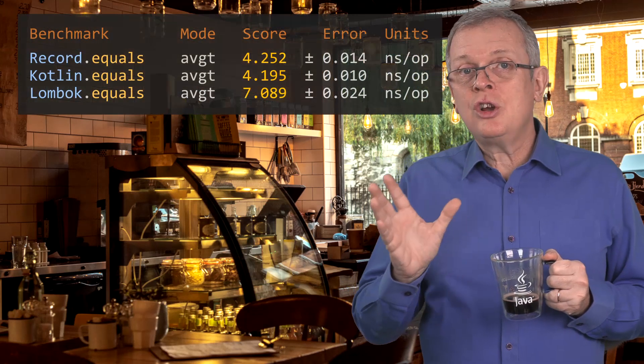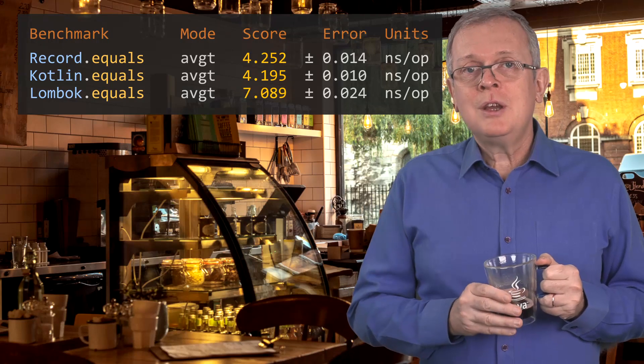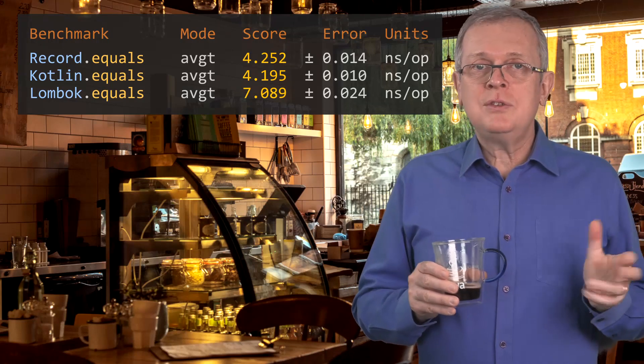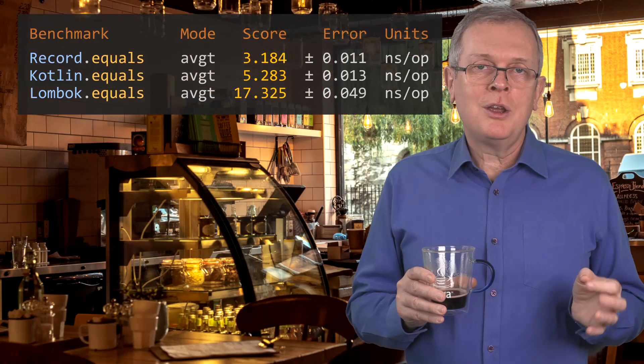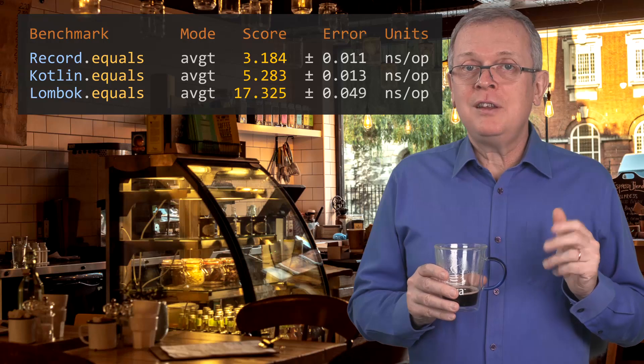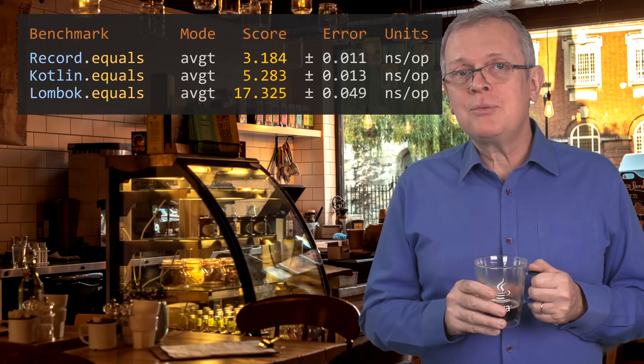Third, we compare two objects that are just different — all fields are different. Seeing that they are different should be fast; it should happen on the first of the five fields. The record and Kotlin implementations are almost the same, where Lombok is about 50% slower — about three nanoseconds, so not too bad, but still significant. The last benchmark consists of comparing objects that are different but almost the same: their first fields are the same and only the last of the five fields differ. Results are consistent with the rest: records perform a little better than Kotlin data classes, and Lombok is significantly behind by a factor of more than five.